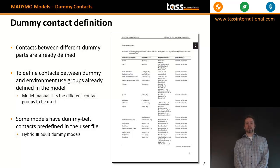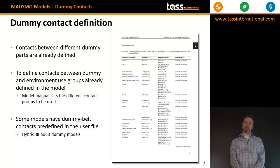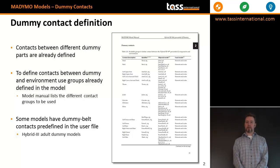Some models also have dummy belt contacts predefined in the user file. The Hybrid 3, for example, already has shoulder belt and lap belt contacts.